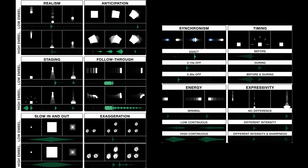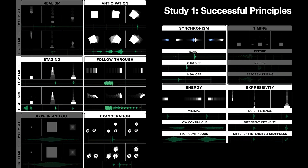In the interest of time, I will only report the key results from Study 1. So controlling for the visual condition, we found that haptic embellishments designed with the following highlighted principles improved user preference ratings.